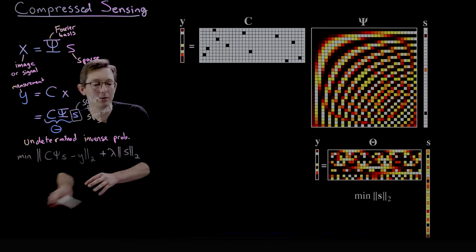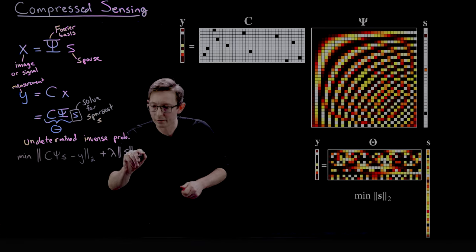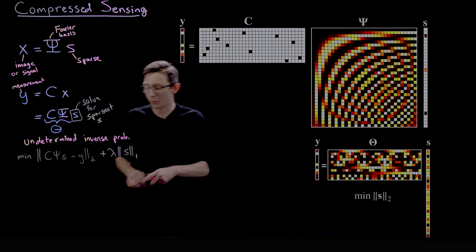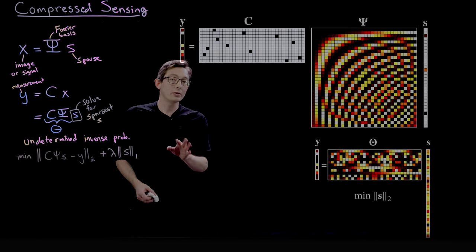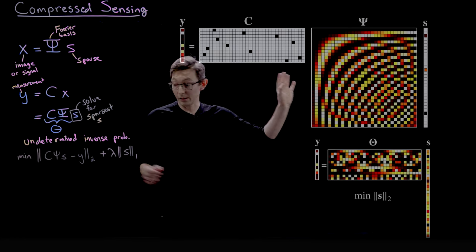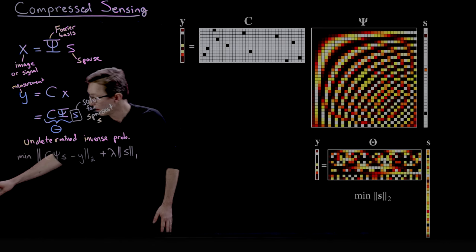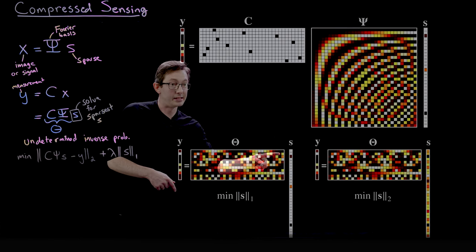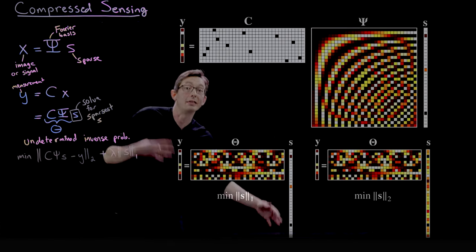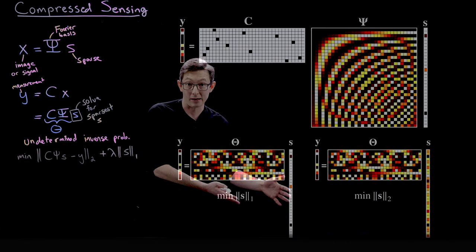And so instead of doing the two norm, what we can do is put in this one norm here. And the one norm I'm going to tell you all about the one norm later. But what the one norm does is it promotes solutions of the system that have as many zero entries as possible. So when you solve for the minimum one norm solution, this is what you get. You actually find the original solution s that is as sparse as possible.